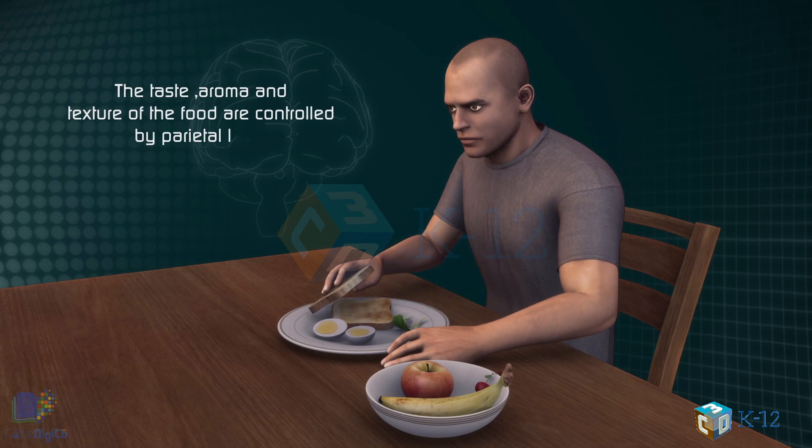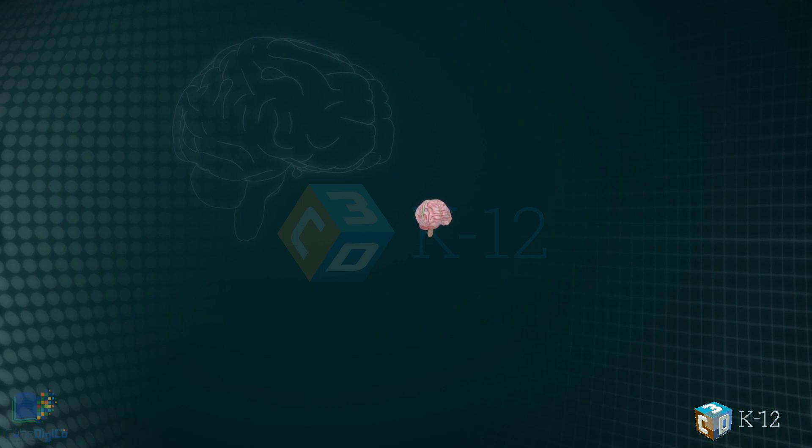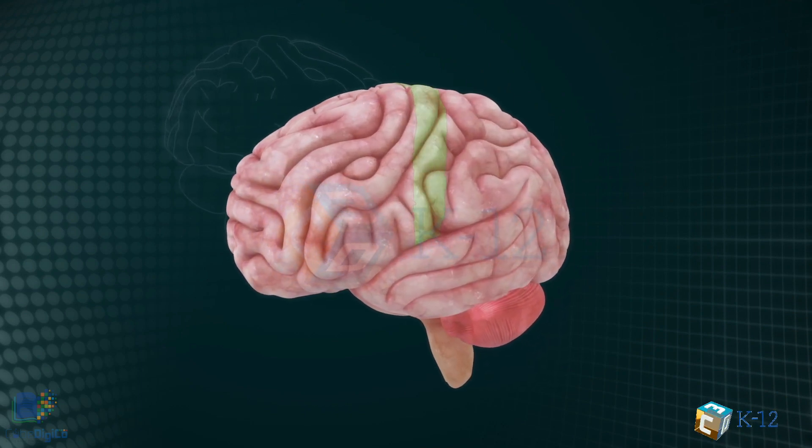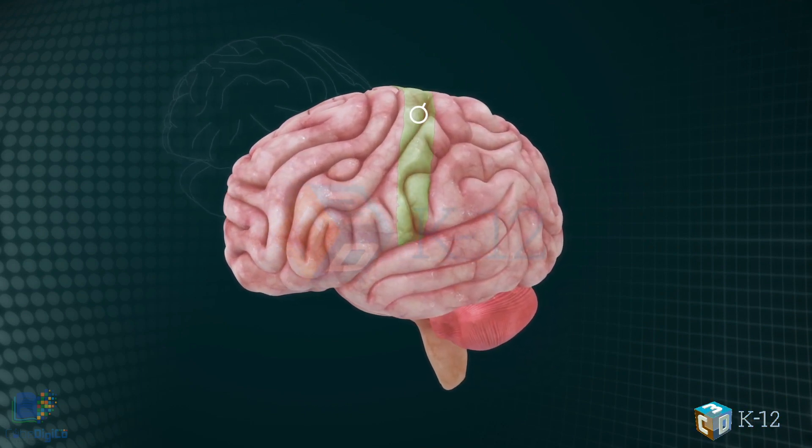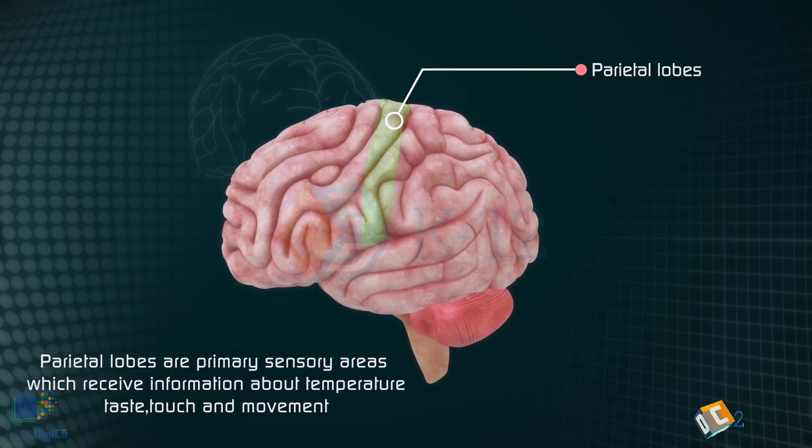When you enjoy a good meal, the taste, aroma, and texture of the food, two sections behind the frontal lobes called the parietal lobes are at work. The forward parts of these lobes, just behind the motor areas, are the primary sensory areas. These areas receive information about temperature, taste, touch, and movement from the rest of the body.